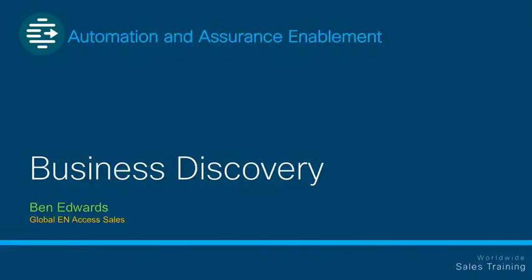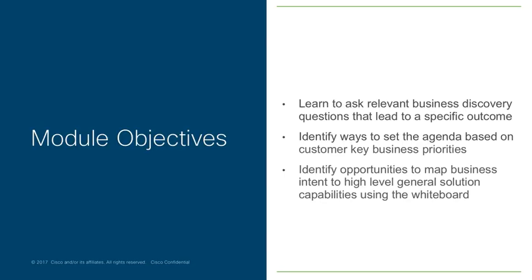Welcome to the DNA Center Assurance and Automation Enablement Stage 1 Module on Business Discovery. In this module, you will learn to ask relevant business discovery questions that lead to a specific customer outcome or customer intent.